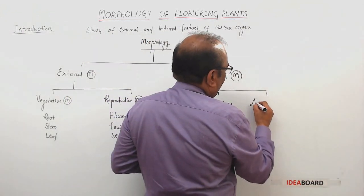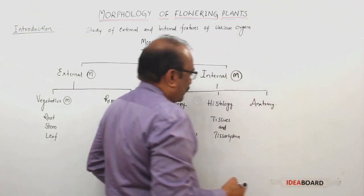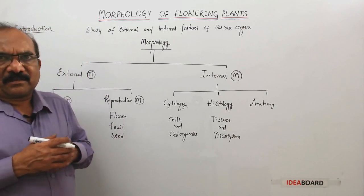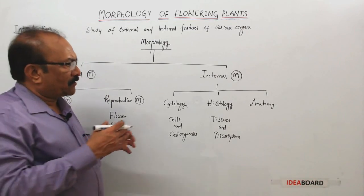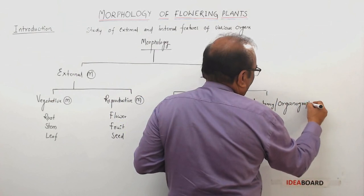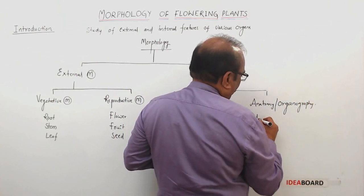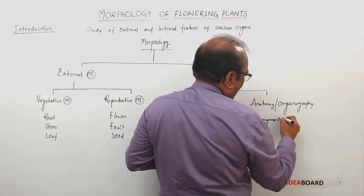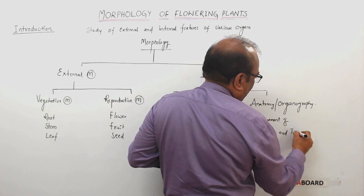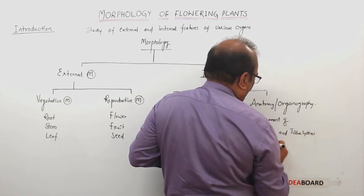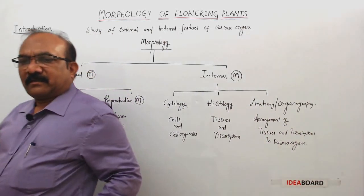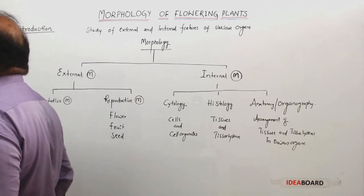The third branch is anatomy. These tissues and tissue systems — how they are organized in different organs like root, stem, and leaf — that is why this is called anatomy or organography. So, anatomy covers the arrangement of tissues and tissue systems in organs.